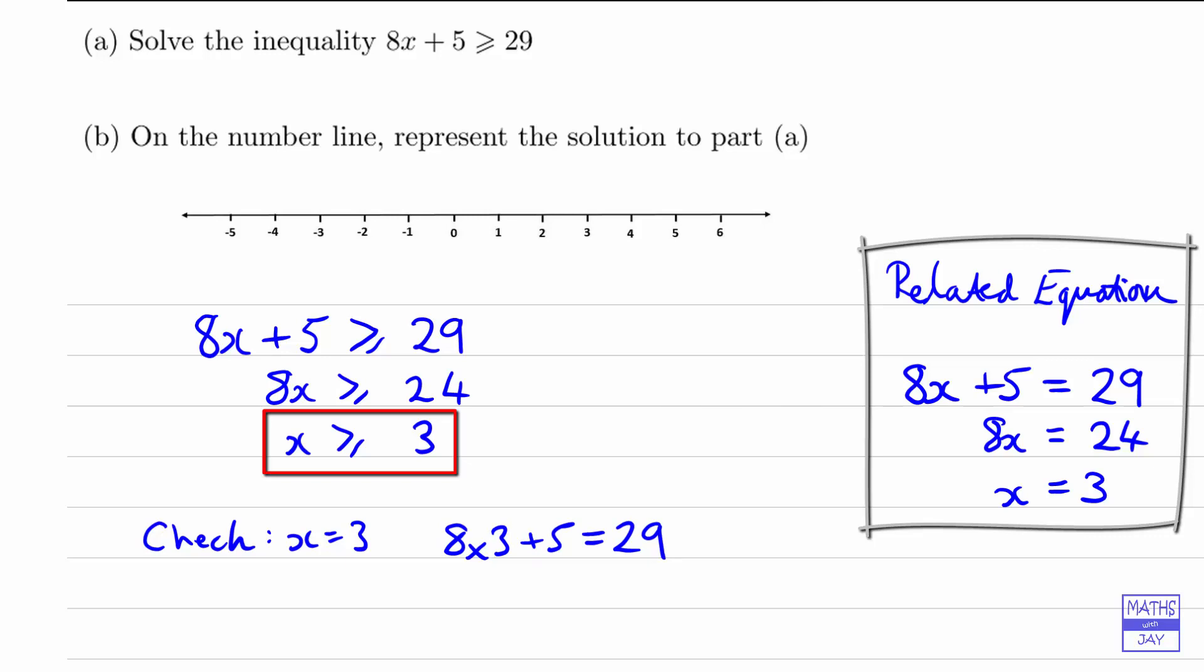And then because we found that x is either equal to 3 or greater than 3, we're going to choose any value that we like greater than 3. So you could choose 4, 9.2, 100, 10 million, whatever you like. But it's easier obviously to choose a relatively small number, so let's just choose 4.